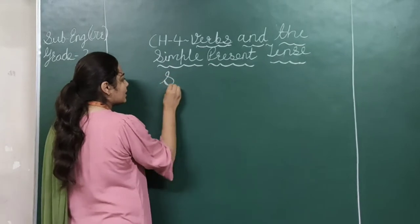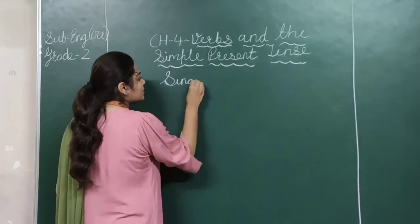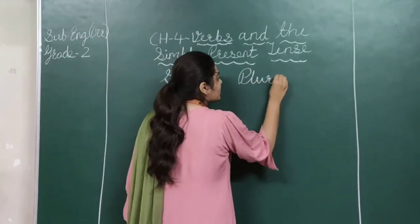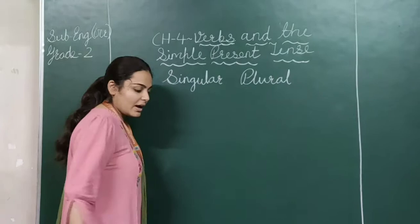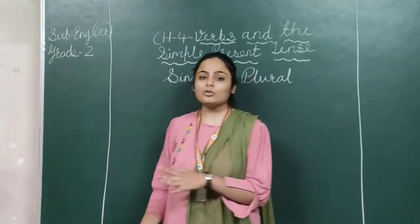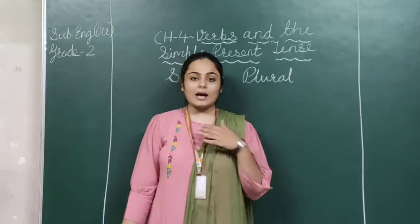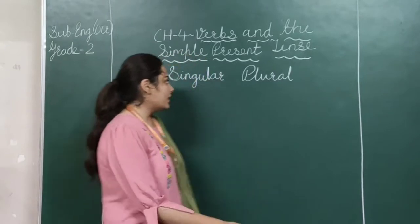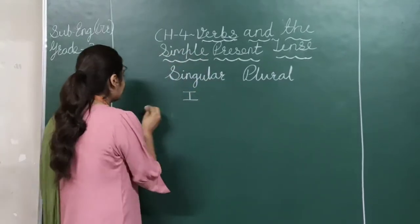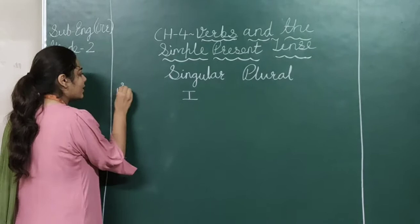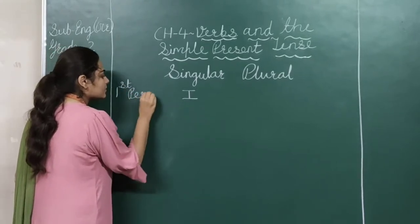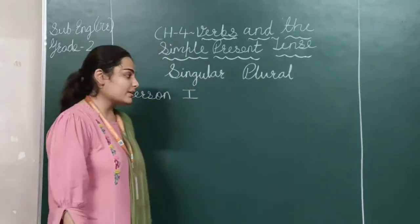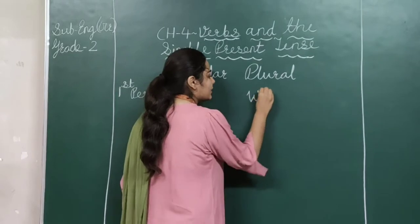First of all, when we are talking with anyone, there are three types of persons. First person, like 'I' — 'I' is included in the singular. It is called first person. What we write in plural for the first person? We write 'We'.